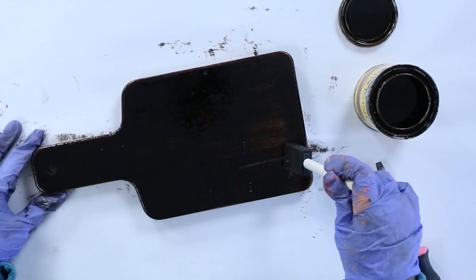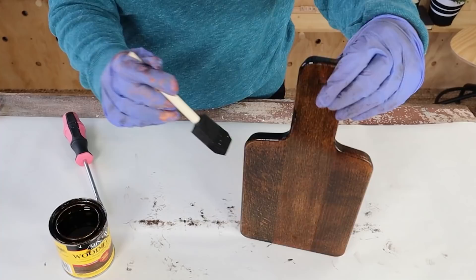Now since I wanted this stain to be really dark, I decided to actually do two coats, so I added some additional stain to it and wiped it off with a paper towel.